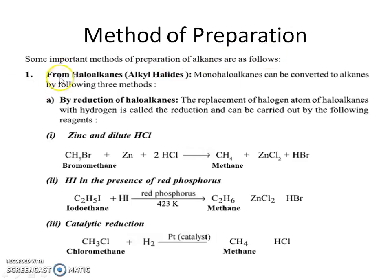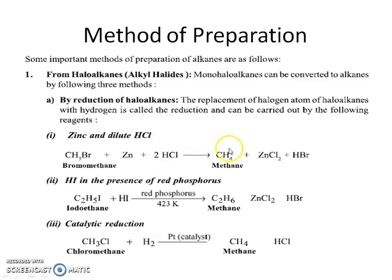Methods of preparation of alkanes: from haloalkanes — monohalogenated alkanes can be converted to alkanes by reduction in the presence of zinc and dilute acid. For example, bromomethane can be converted into methane. In the presence of red phosphorus, alkanes can be obtained via catalytic reaction.